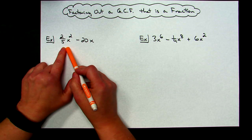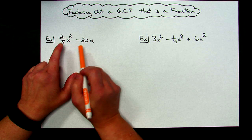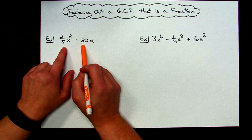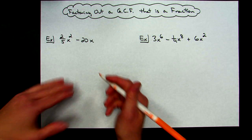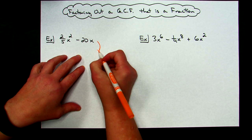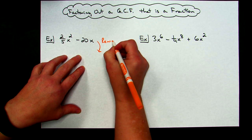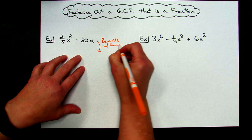In this first example, I've got 2/5 x² minus 20x, and I need to take out a greatest common factor. Looking at 2/5 and 20, it might be a little difficult telling what the greatest common factor is. So if you do one step first before you think about that, it's going to help. My recommendation is to rewrite those coefficients with common denominators.